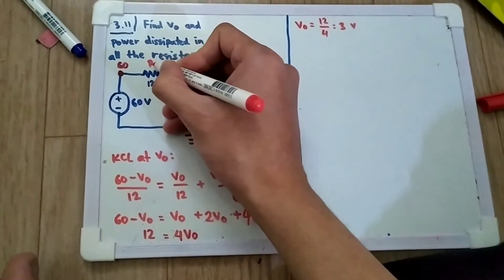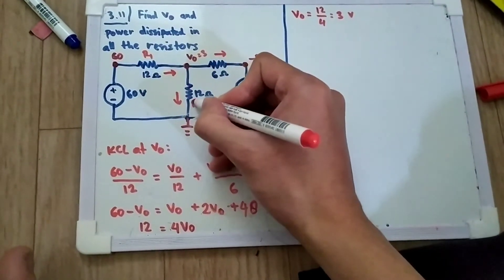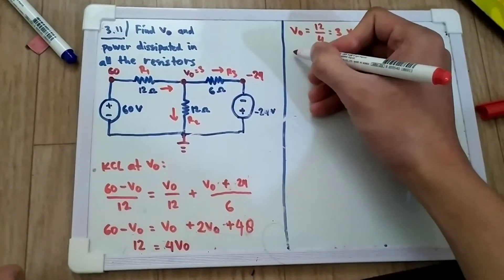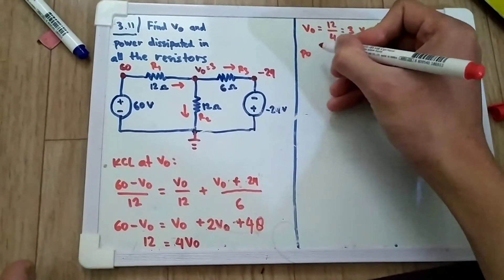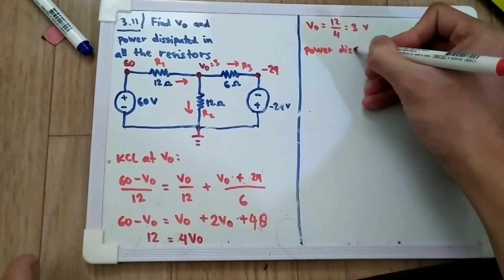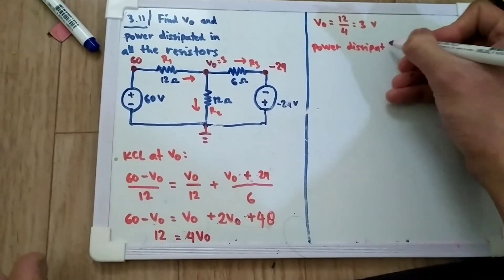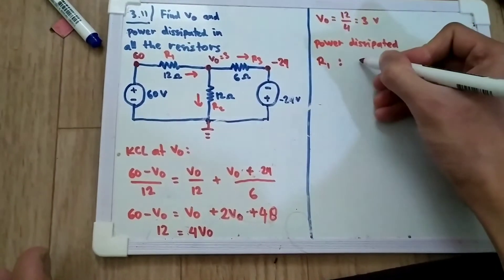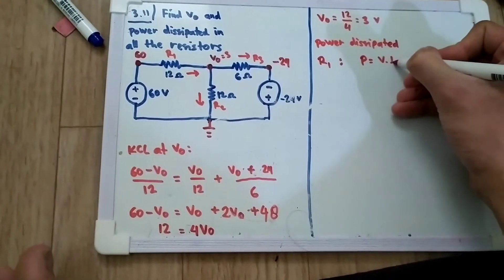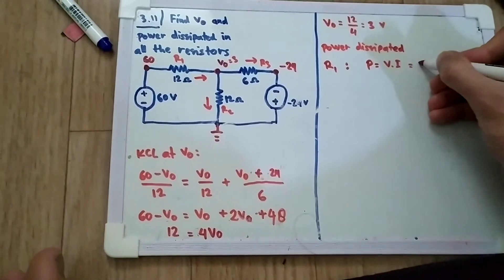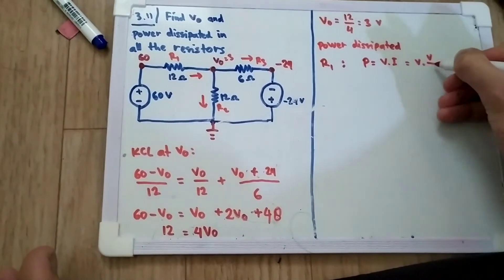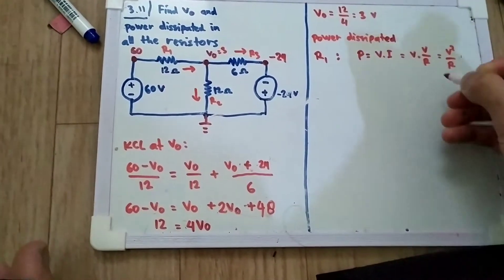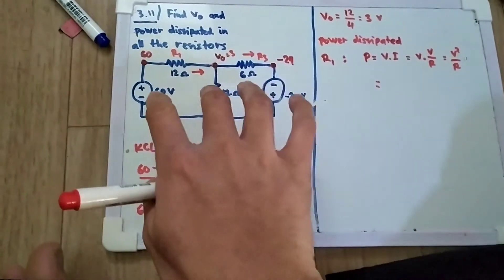Let's name the resistors: R1, R2, and R3. Now we need to find the power dissipated in each resistor. Starting with the power formula: P equals V times I. Using Ohm's law, this becomes V times V over R, which equals V squared over R.